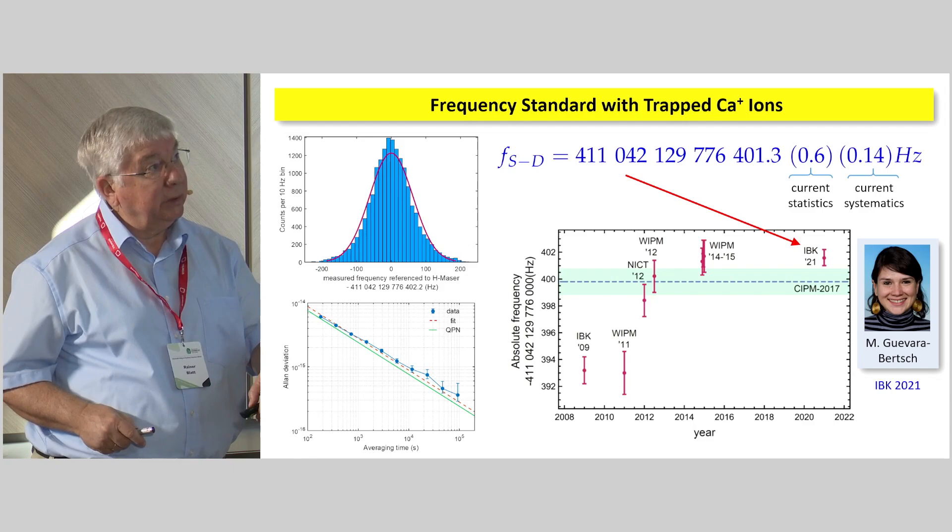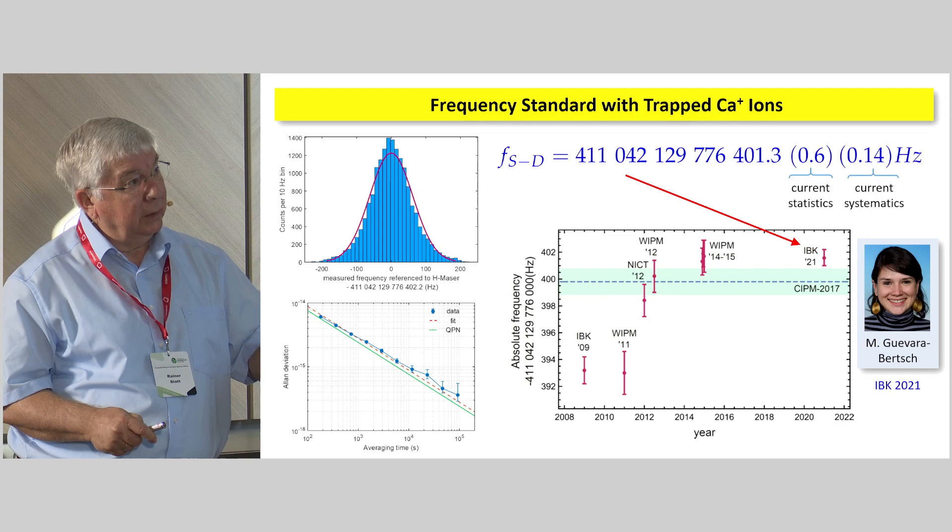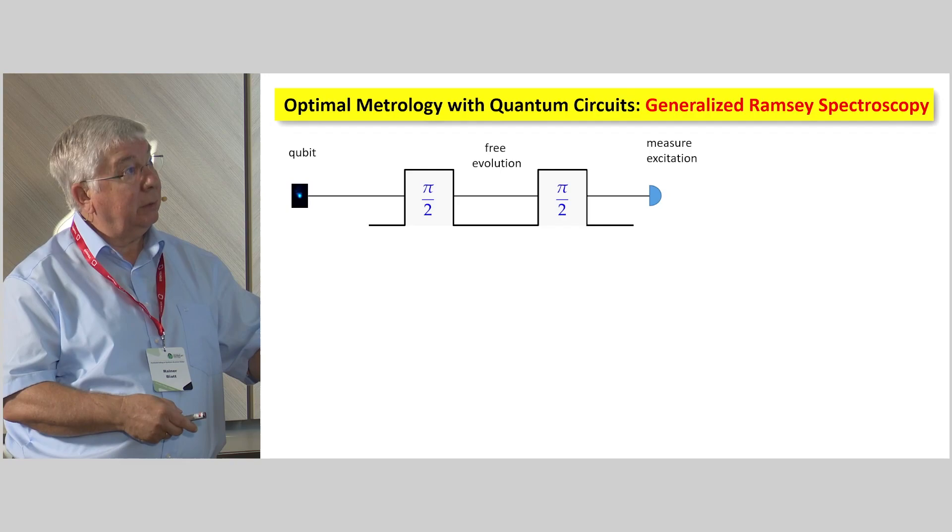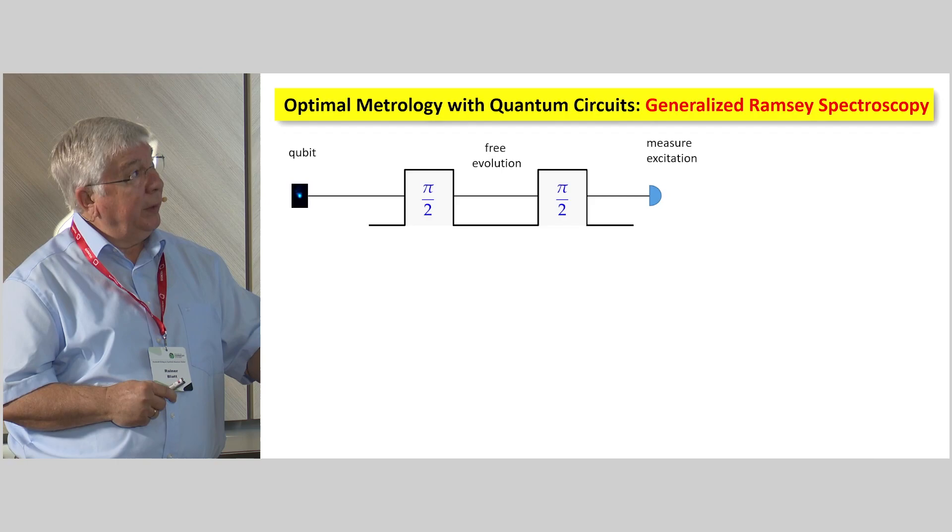And these measurements are routinely now done. The question is, can we improve these measurements? We heard already yesterday from one of the talks that we could use possibly, if we measure ensembles, we can use spin squeezing, for example. The question is, can we generalize Ramsey spectroscopy in this way? This is the usual way to do it. But now we have, say, many ions. Can we just make use of that?